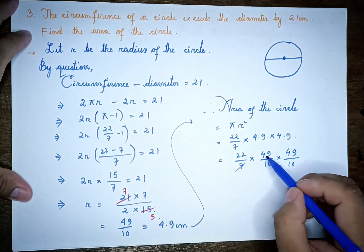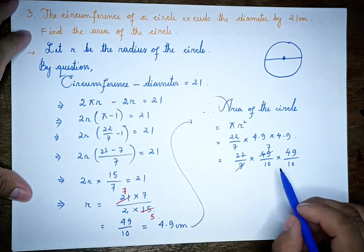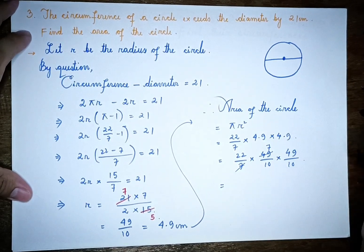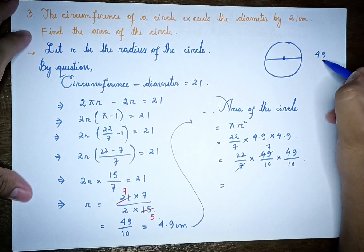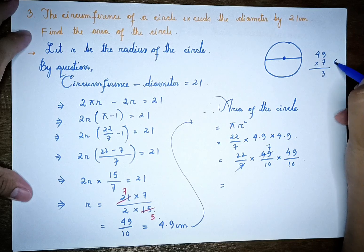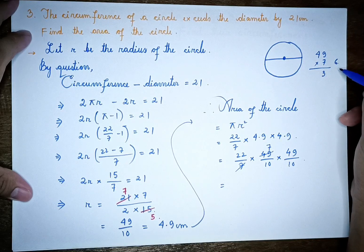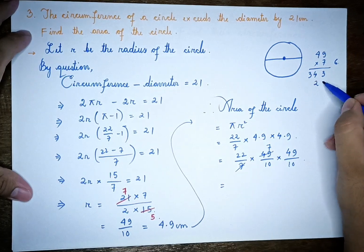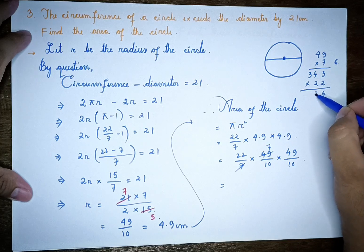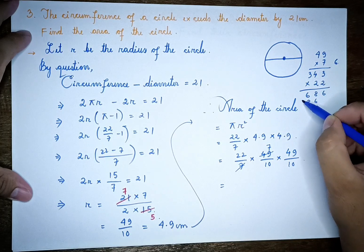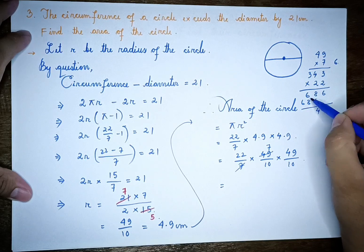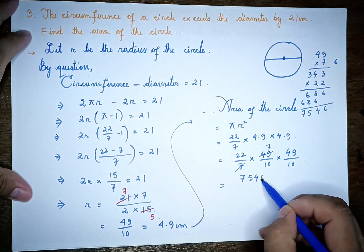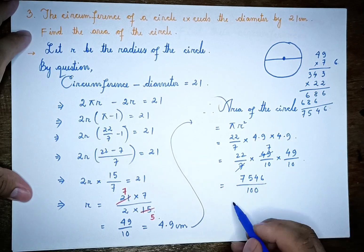Area = (22/7) × (49/10) × (49/10). Simplifying: 7 divides into 49 giving 7, so area = 22 × 7 × 49 / (7 × 100). Computing the numerator: 22 × 49 = 1078, giving an area calculation in progress.